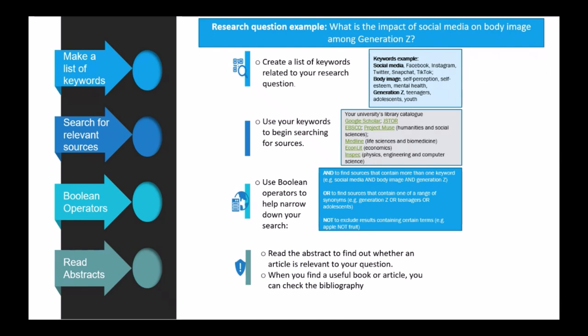You can use NOT to exclude results containing certain terms. For example, if you are interested in people's use of Apple products but you don't put NOT in, you are going to get lots of fruit-related results in your literature search. So Boolean operators help you narrow down your results precisely. Then the next step is to read the abstracts to find out whether an article is relevant to your question.